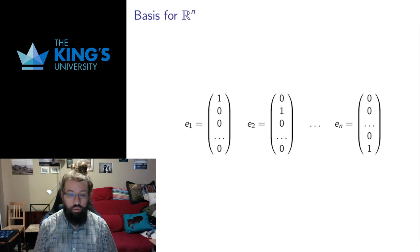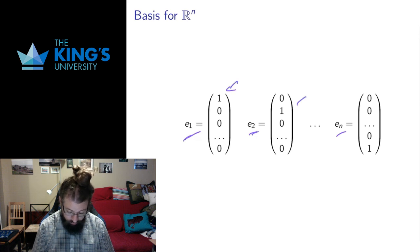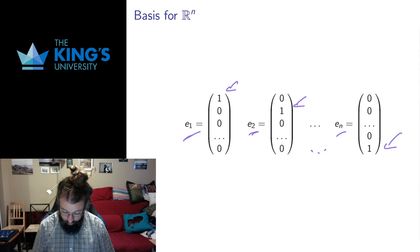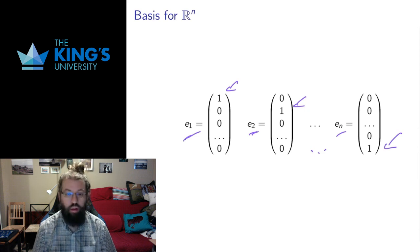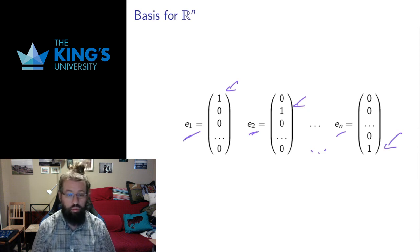The same thing works for Rn. We label the standard basis vectors E1, E2, all the way up to En, where E1 points in the first axis direction, E2 points in the second axis direction, and En points in the nth, or last, axis direction.